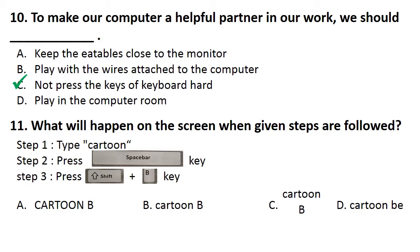Next question, what will happen on the screen when given steps are followed? Three steps are given. First step is type cartoon, second step is press spacebar key, and third step is press shift plus B key. So the correct answer is option B, cartoon space capital B.